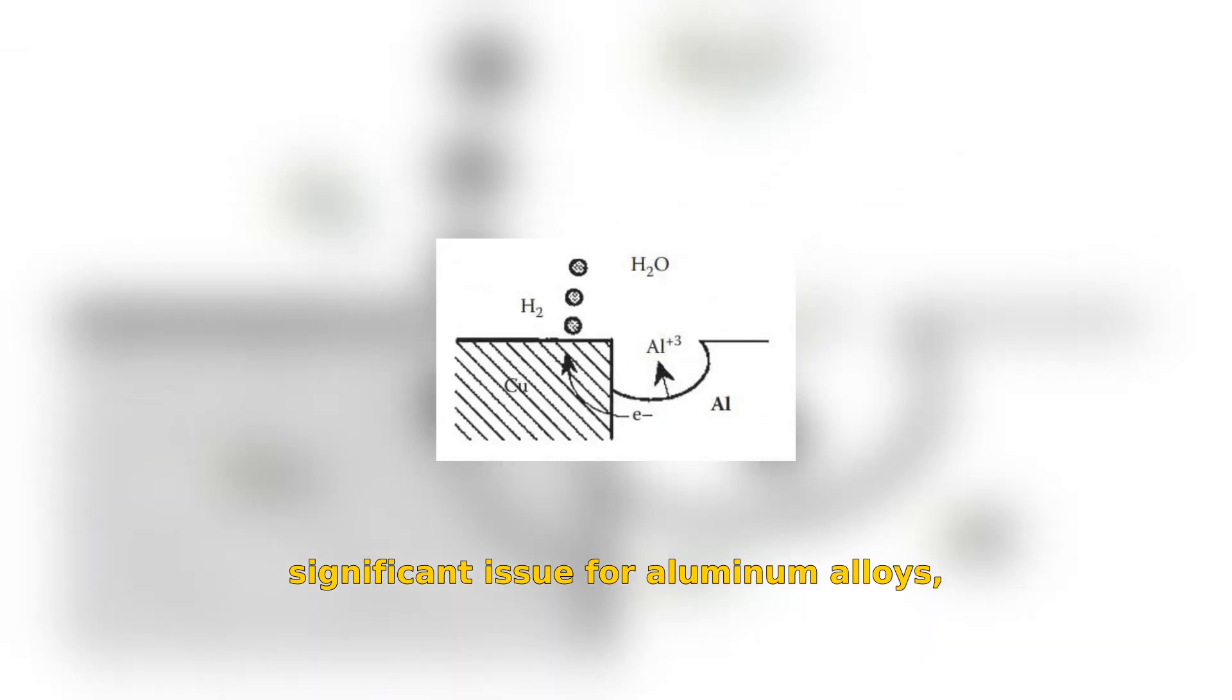Galvanic corrosion is a significant issue for aluminum alloys, occurring when aluminum is in contact with a more noble metal. The size of the cathode area dictates the amount of cathodic current, which affects the corrosion rate.